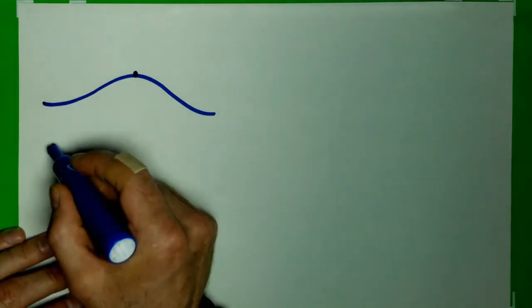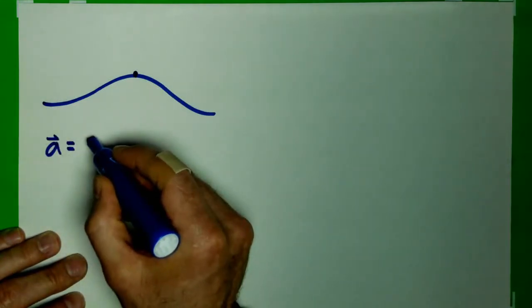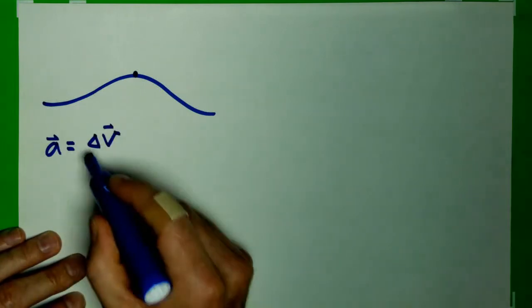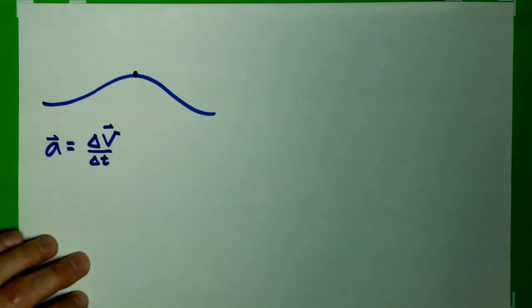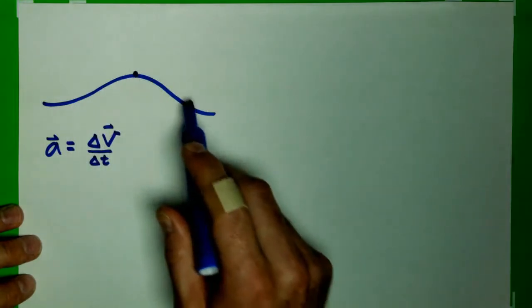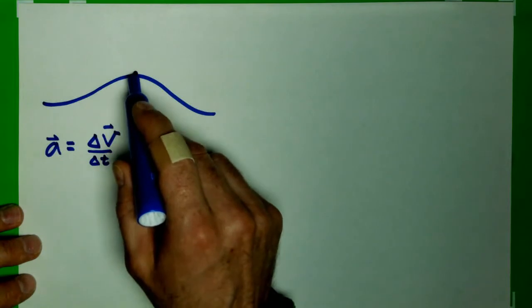So remembering that acceleration in its full vector form is proportional to the change in velocity in its full vector form, and that proportionality is just divided by the time interval. Now, in the case of this constant speed, the only thing that's changing is the direction.